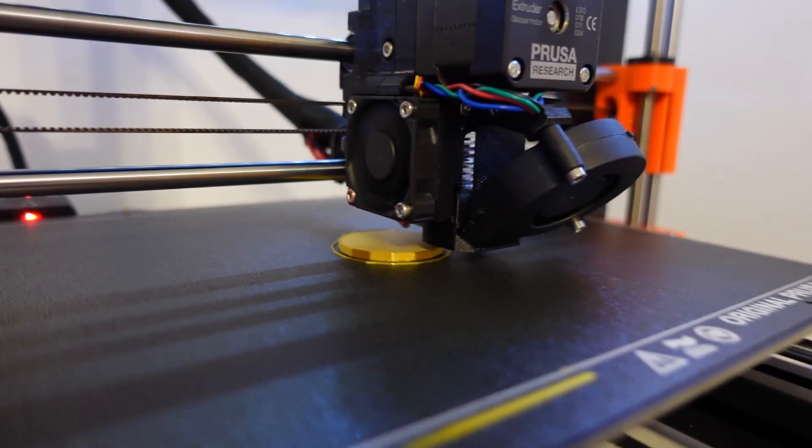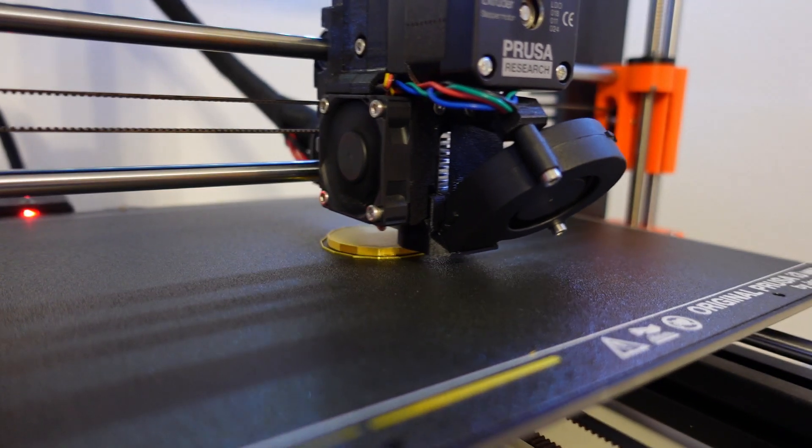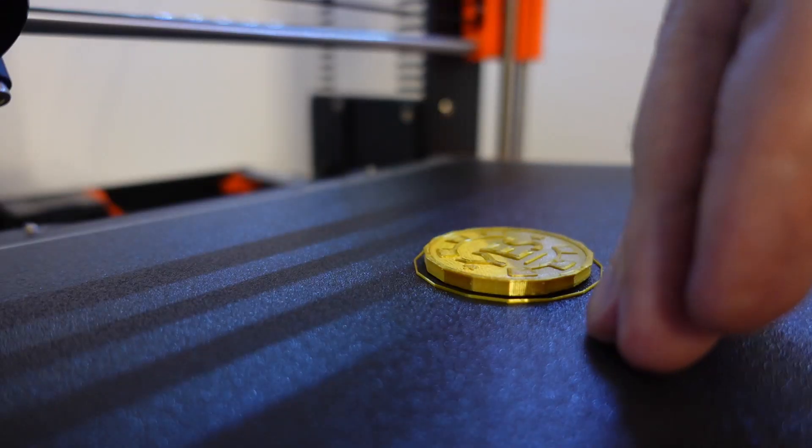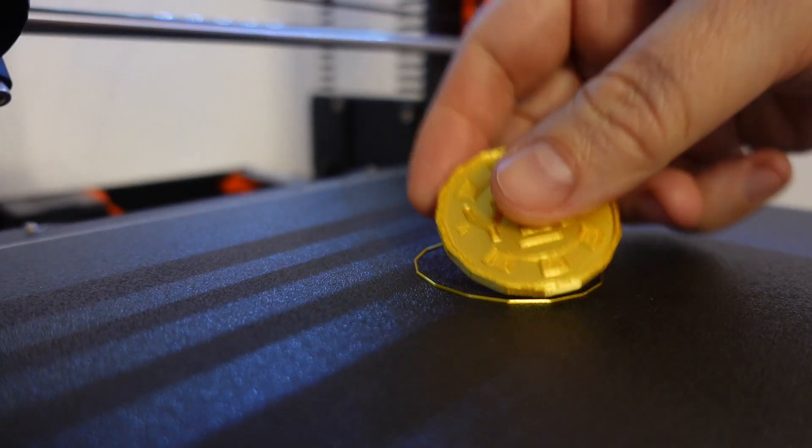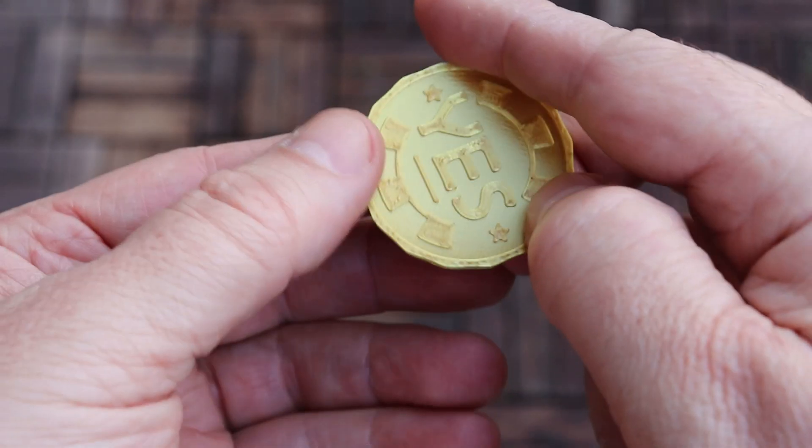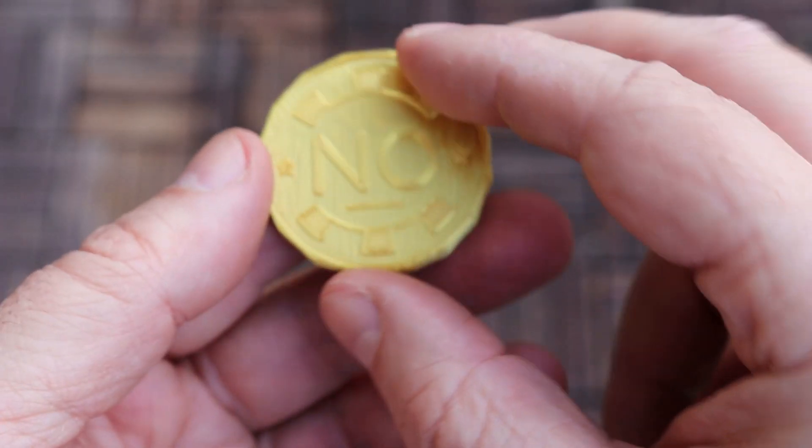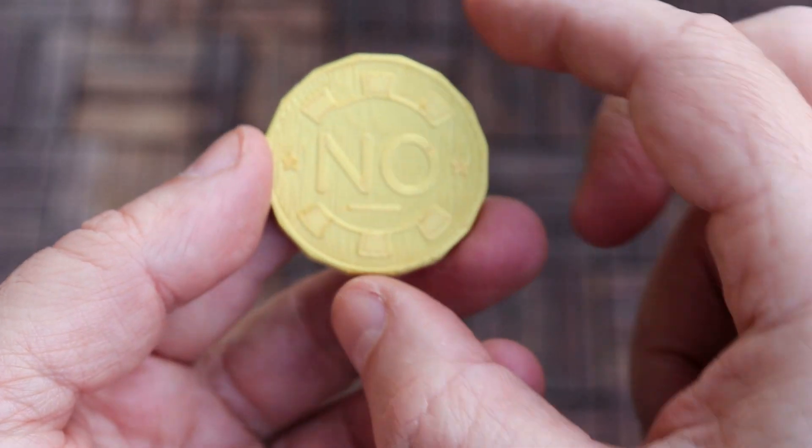And of course if gold PLA, then let's print some coins. My first attempt was to print it in horizontal position. The side looks great, and also the top of the printing is acceptable. Only the back side - the bridging never looks good as a surface.